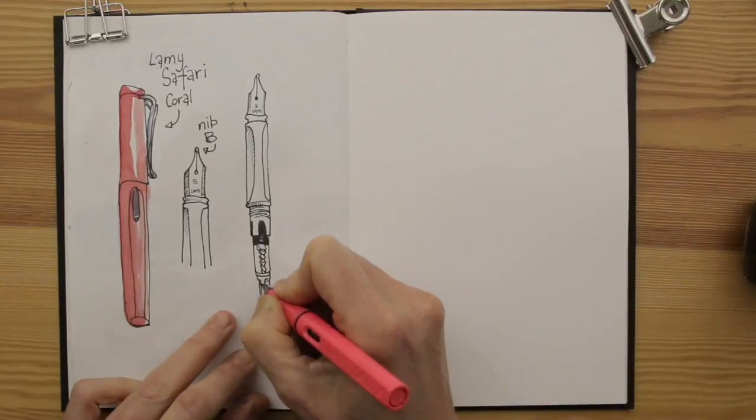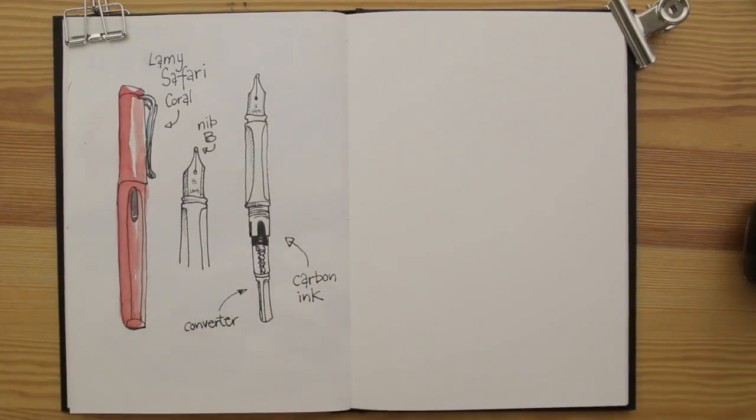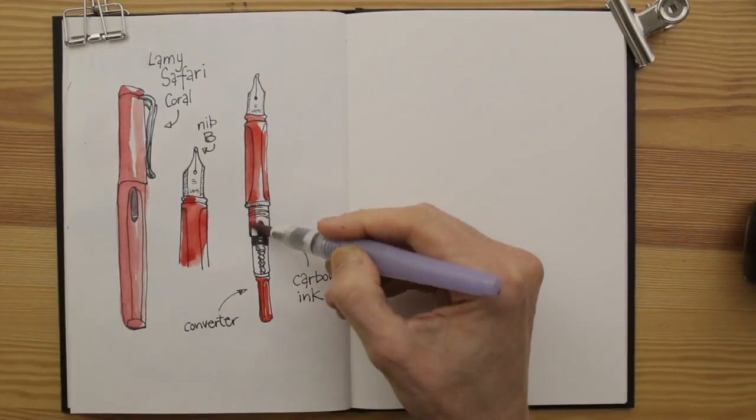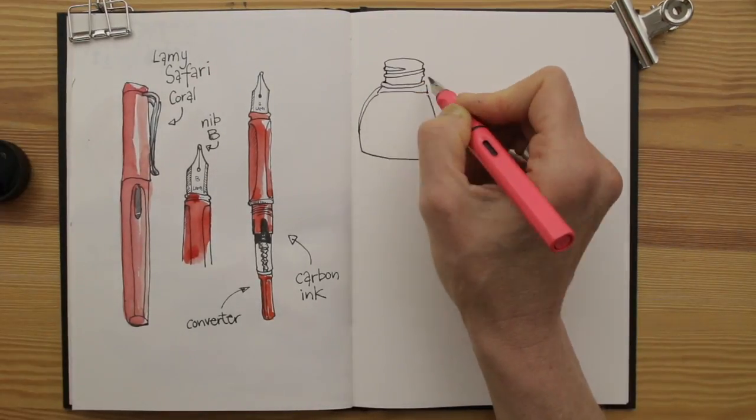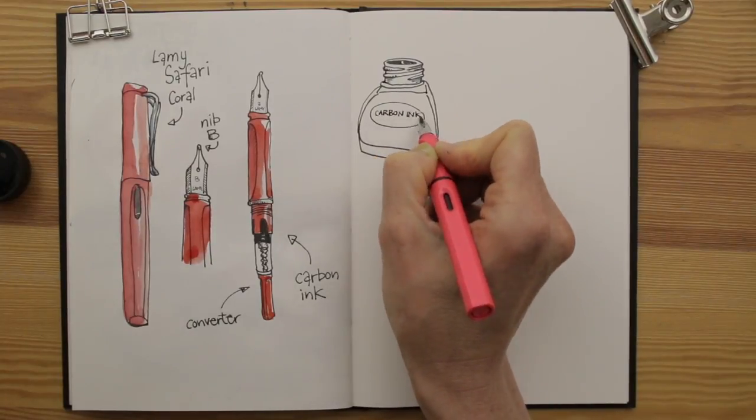Because I like using watercolors, I use waterproof ink in my Lamy. For this, I use a converter, so I don't need to buy cartridges. With a converter, you can fill your pen straight from the ink bottle. I use Platinum Carbon Ink. It's waterproof and comes in a small bottle.